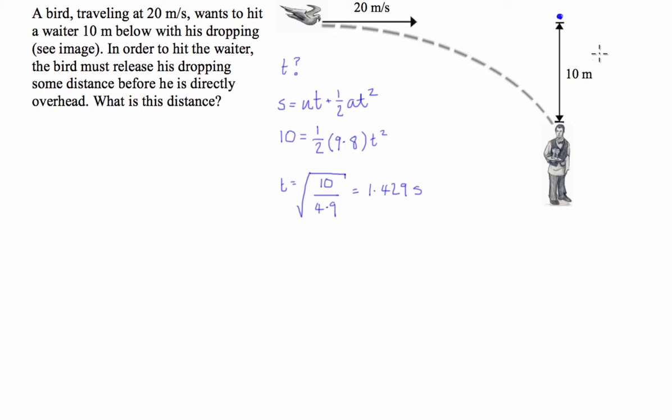So basically what we've found out is the dropping will take 1.429 seconds to fall 10 metres through the air. So the distance the bird is going to have to be away, because once the dropping is released, if we're ignoring air resistance, which we are, the dropping will just carry the bird's horizontal velocity with it. So the dropping will be travelling horizontally at 20 metres a second, and it's only its vertical velocity that changes.